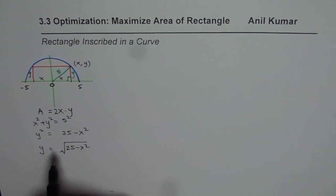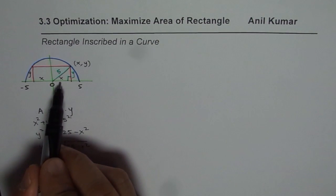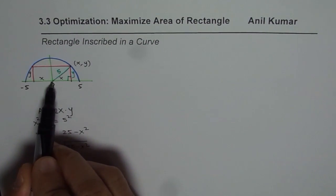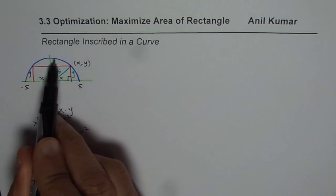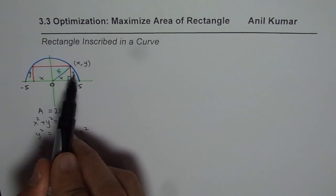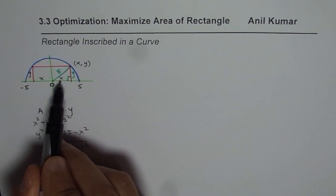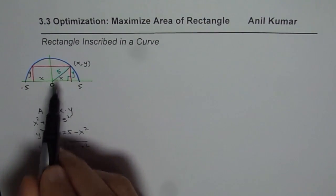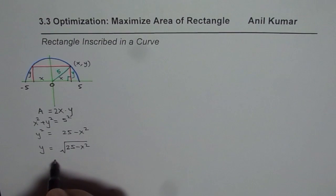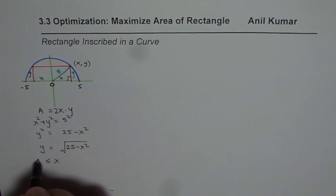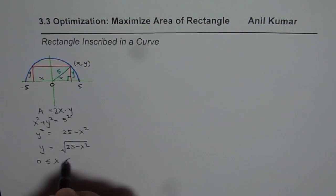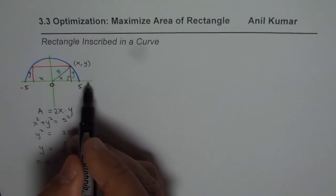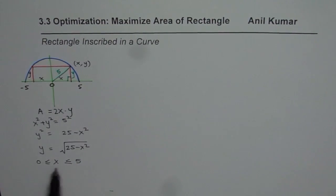Now you will also notice that the point x could be anywhere, but wherever it is, x has a boundary condition: x could be greater than or equal to 0 but less than or equal to 5. Otherwise it will be outside the circle.